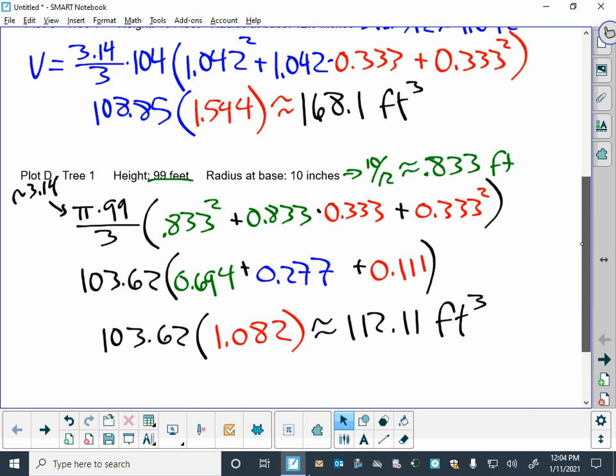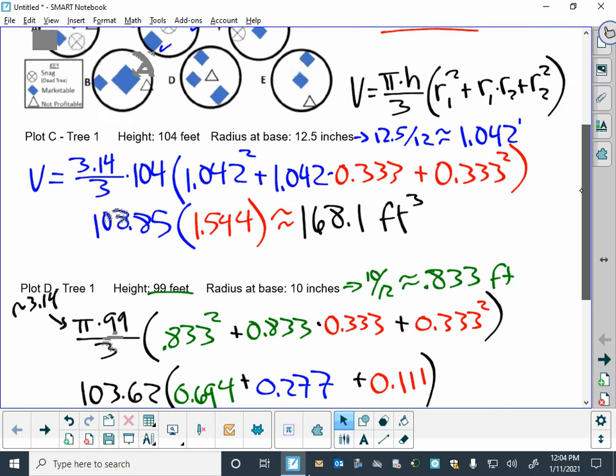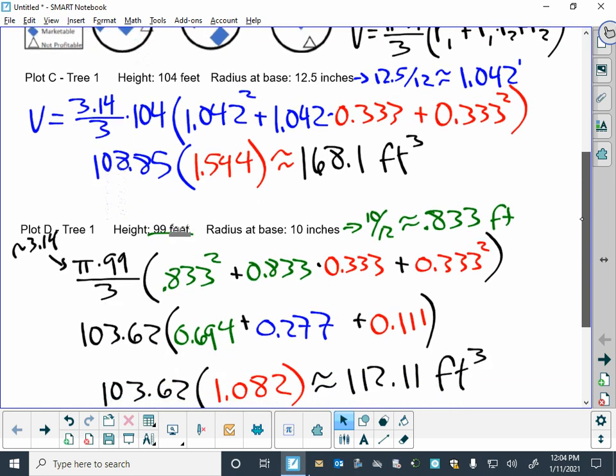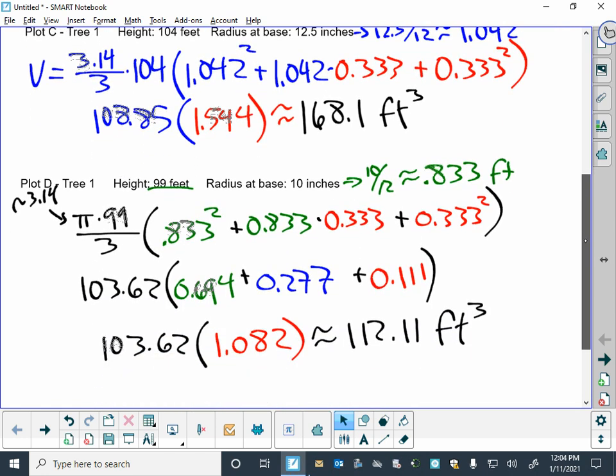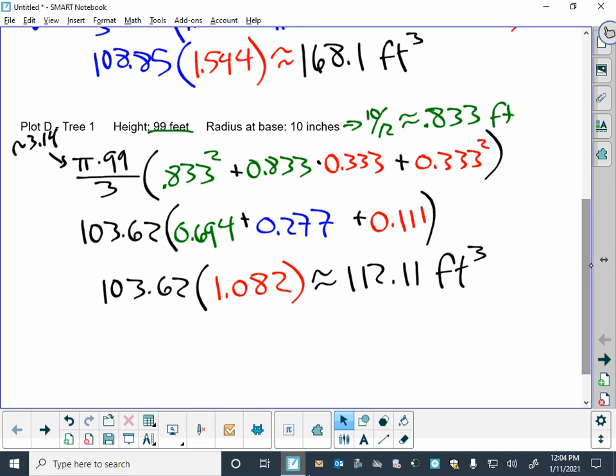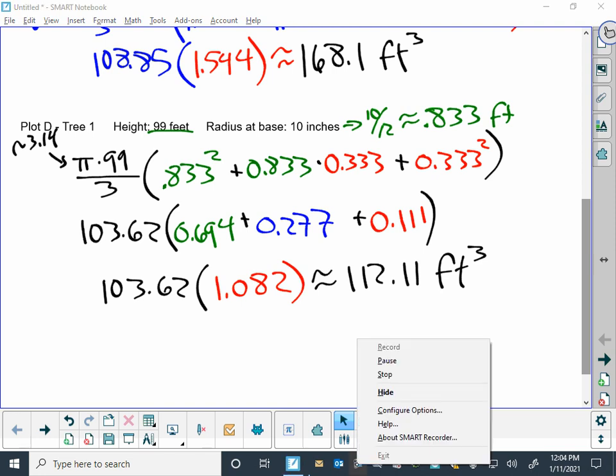So a little bit shorter tree to begin with and smaller in radius, and quite a bit less lumber in that one. But that's the way that you do those calculations. That's what you're going to need, and hopefully that helps things out.